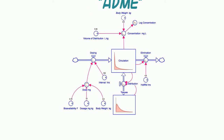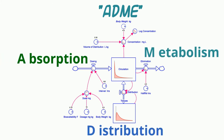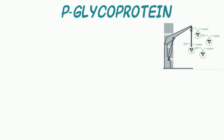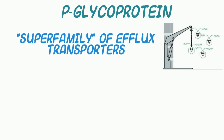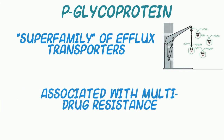Transporter carrier proteins impact all aspects of drug or toxin movement in the body — that is, absorption, distribution, metabolism, and excretion. Perhaps the most important and ubiquitous of these proteins is p-glycoprotein, which is part of a superfamily of efflux transporters. Its expression has also been associated with the development of multi-drug resistance to antibiotics and cancer chemotherapy drugs.